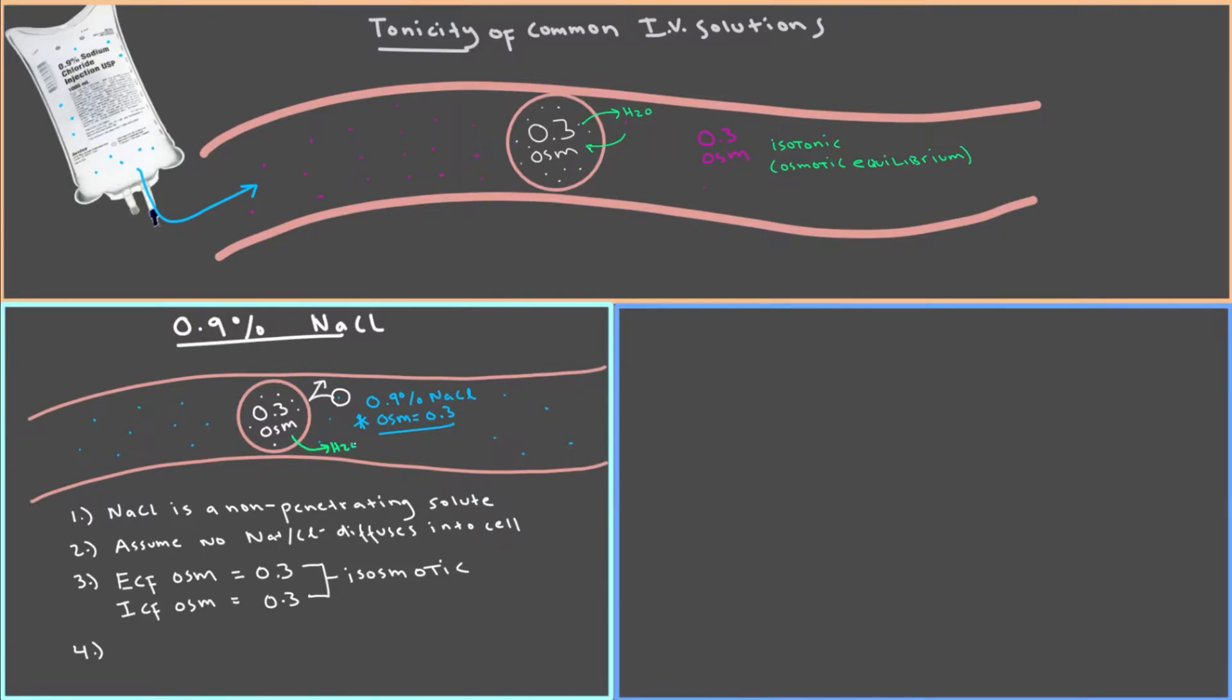So water might flow out, but it'll flow in at the exact same rate. Because remember, water always goes towards the higher osmolarity, but here, since the osmolarities are the same, water overall will not enter or leave the cell. So that means that the tonicity, in this case, is isotonic. Water did not enter or leave the cell, meaning that the plasma and 0.9% sodium chloride are isotonic to your red blood cells.